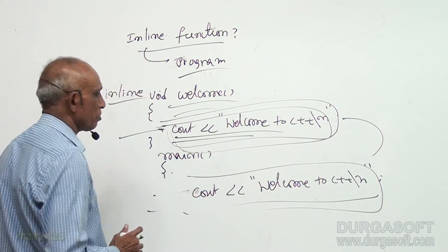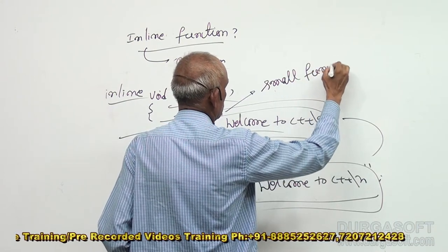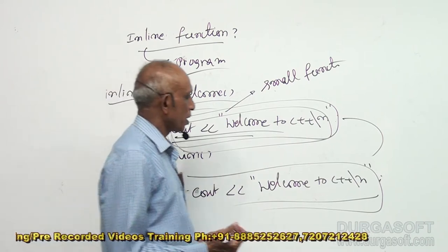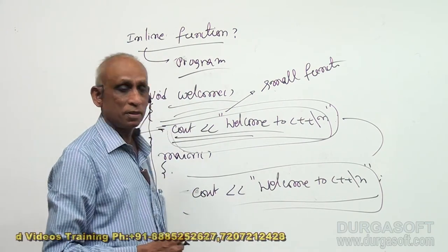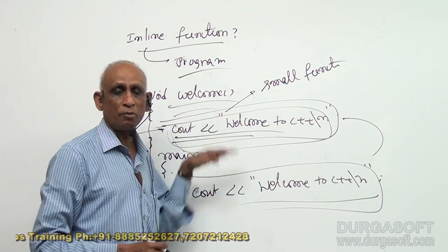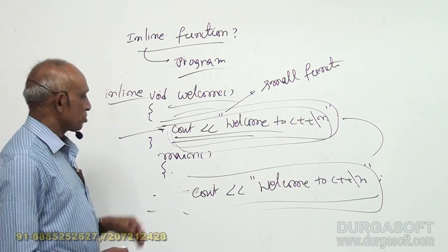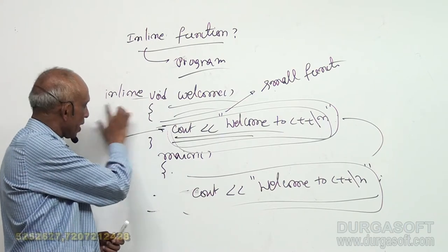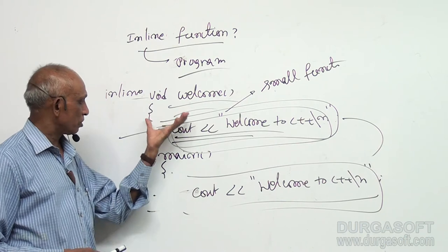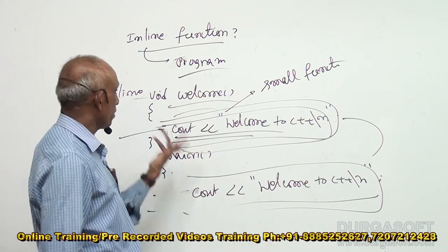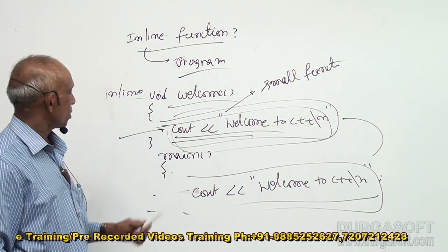So, wherever time is critical, we can do this — this is called an inline function, and it is used for time saving. This is usually done for small functions: one line, two lines, max three lines. We cannot have an inline function for ten lines or fifty lines. If you make a big function inline, it will copy all fifty lines at every function call, making the code too large — in fact, the compiler will not allow it. So inline is actually an optional thing. Even if you write inline, there is no guarantee the compiler will accept it. It may or may not. If the function is significantly large — four, five lines or more — the compiler may reject your request and treat it as a normal function call.